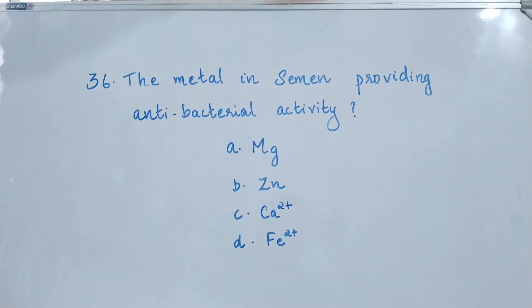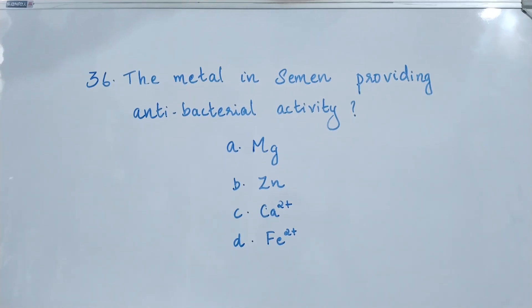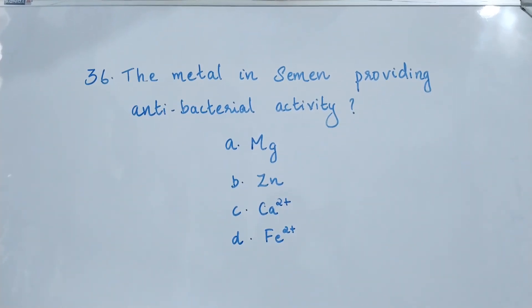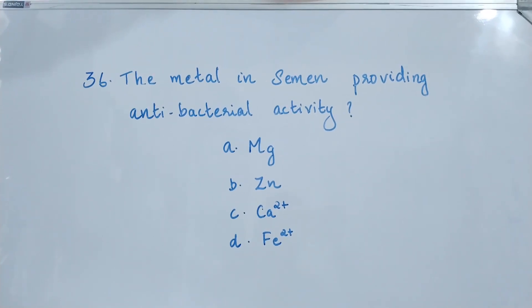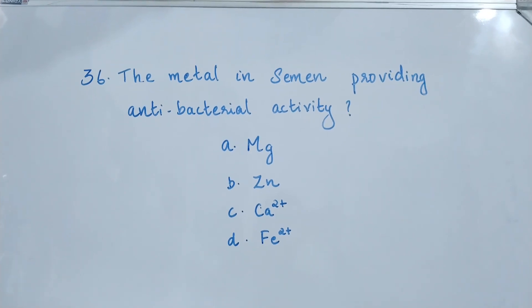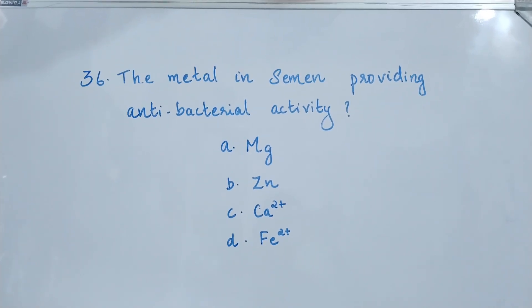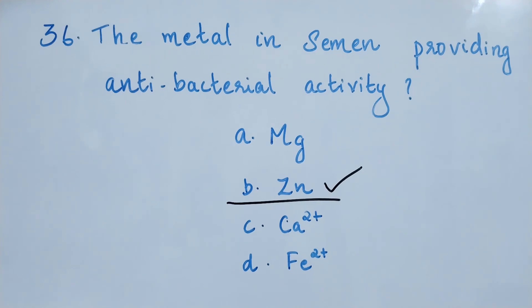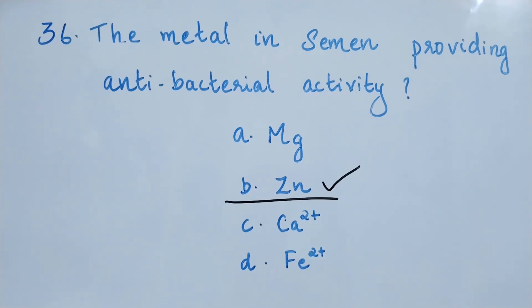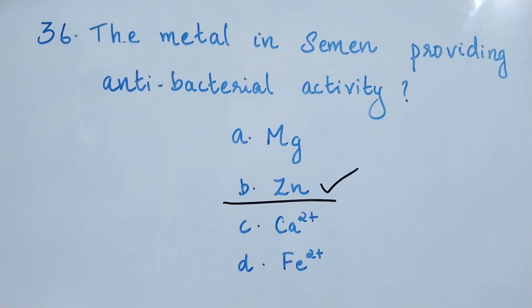The metal in salmon providing antibacterial activity. Option A: magnesium. Option B: zinc. Option C: calcium. Option D: iron. Which of the following metals is providing antibacterial activity to salmon? The answer is option B, zinc.